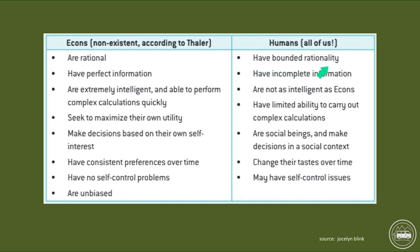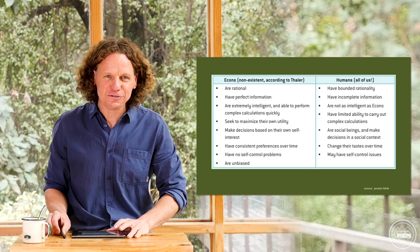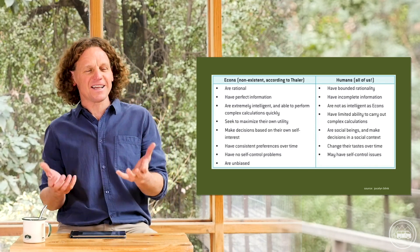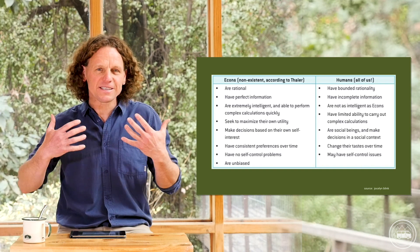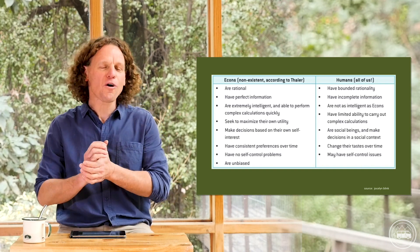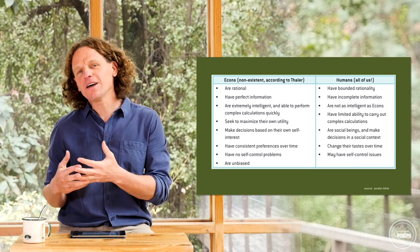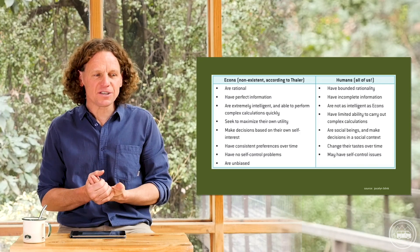Humans have incomplete information, not perfect information. We are not as intelligent as econs and have a limited ability to carry out complex calculations. We are social beings who make decisions in a social context, not robots making decisions based solely on ourselves. We change our tastes over time, and yes — we do have self-control problems. Thaler is saying: let's look at human beings as they function in reality. We don't behave differently in an economic context than in any other situation.